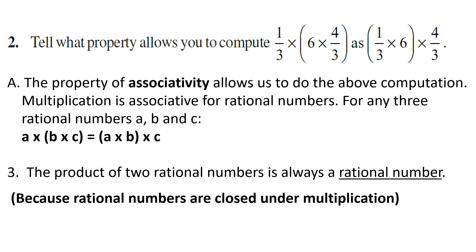Question number 2: tell what property allows you to compute 1 by 3 into (6 into 4 by 3) as (1 by 3 into 6) into 4 by 3. The answer is: the property of associativity allows us to do the above computation.